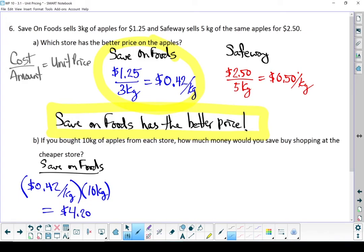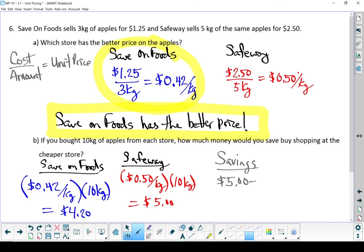Let's move over to Safeway. At Safeway, those apples cost $0.50 a kilogram. Still looking at buying 10 kilograms. At Safeway, that 10 kilograms is going to cost $5 even. Let's end it off by finding our savings. All we have to do is subtract those two numbers. $5 take away $4.20 and we save $0.80 by shopping at Save on Foods.